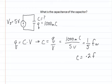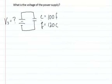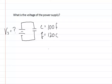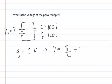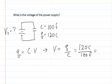Now for the third problem, we're solving for voltage. We don't know the voltage of the supply, but we know the capacitance and the charge. Using the same equation — charge equals capacitance times voltage — we manipulate it to get: voltage equals charge divided by capacitance. Plugging in the values: 120 coulombs divided by 100 farads gives a voltage of 1.2 volts.